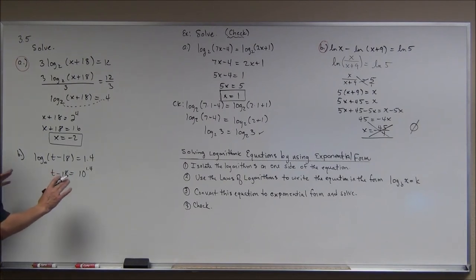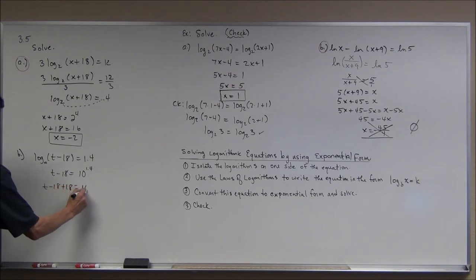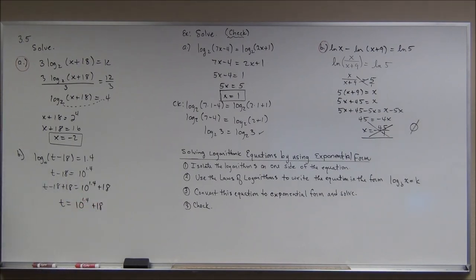Now I don't know what necessarily 10 to the 1.4 power is. I'm sure I can get a calculator and figure that out, but in this case, I don't think I'm going to really need to. I'm just going to write an exact answer. I'm going to add 18 to both sides. And I get t is equal to 10 to the 1.4 plus 18. Now that seems a little complicated, but that is an exact value. And if you take this expression and substitute it in there, you can see the 18s would cancel out. And I'd have a base 10 logarithm of 10 to the 1.4. This is going to check out just fine. Now they get a little more complicated than that, but so far so good.